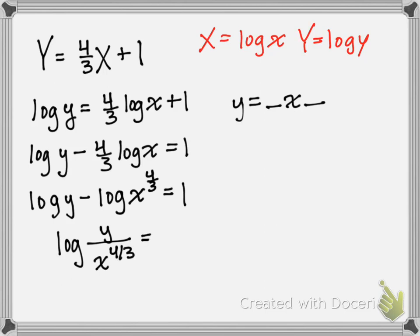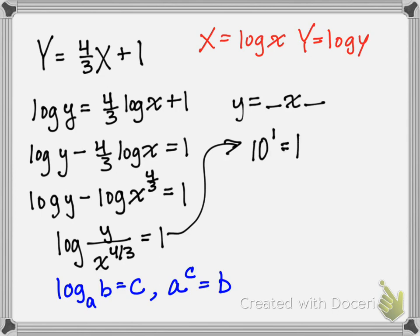Now from here you need to know the definition of a logarithm. The definition of a logarithm says if I have log base a of b equal to c, that I can rewrite that as a to the c equals b. That's what I'm going to use here. I'm going to rewrite this as 10 to the first is equal to y over x to the four-thirds. And then just solving for y, y is equal to 10 times x to the four-thirds.